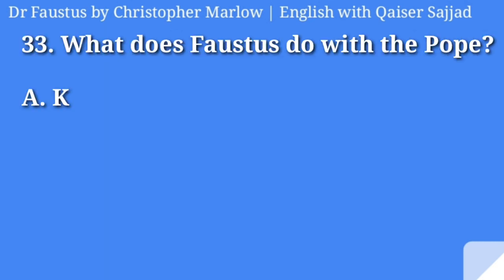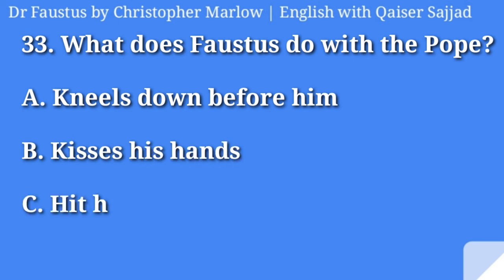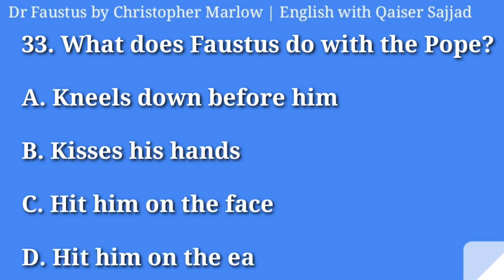What does Faustus do with the Pope? Kneels down before him, kisses his hands, hits him on the face, or hits him on the ear? Answer is option D, hits him on the ear.